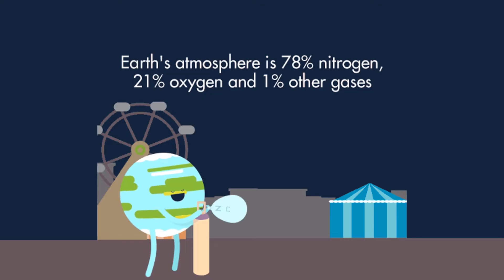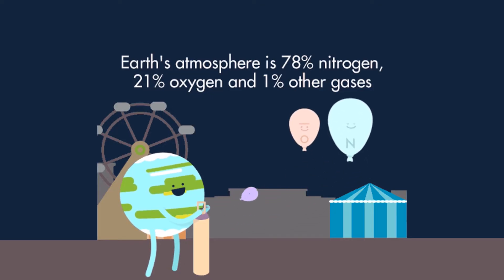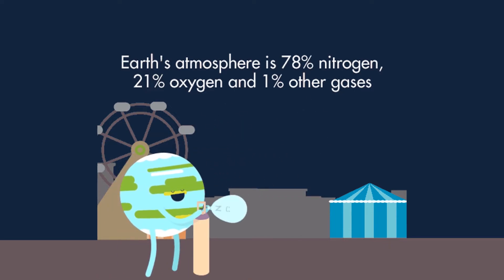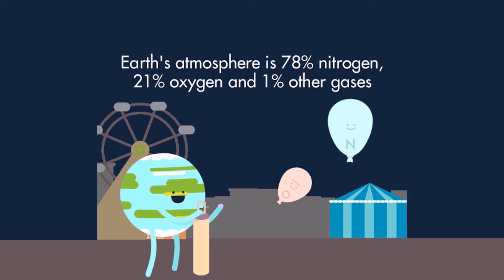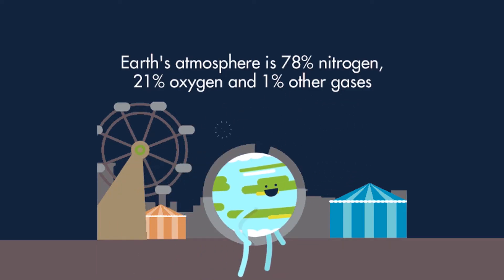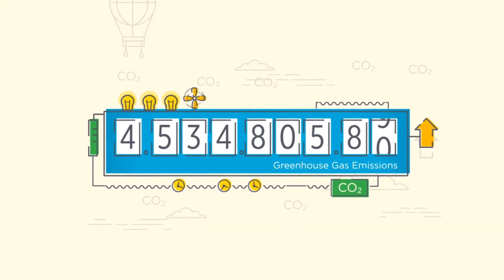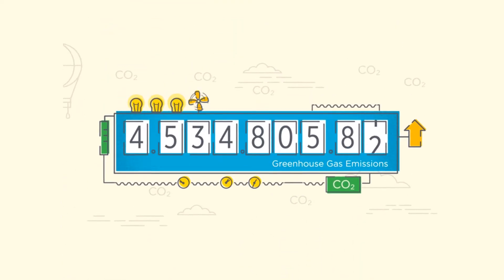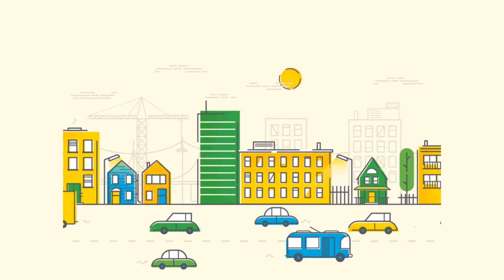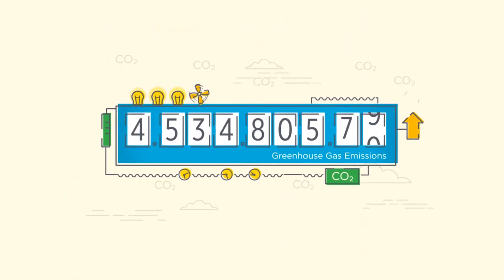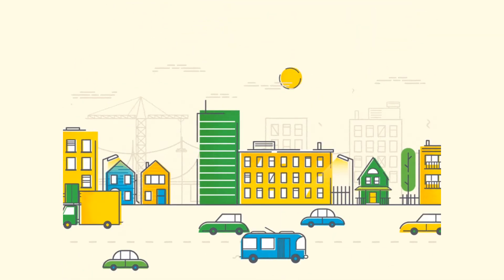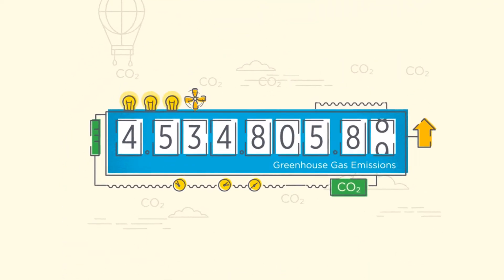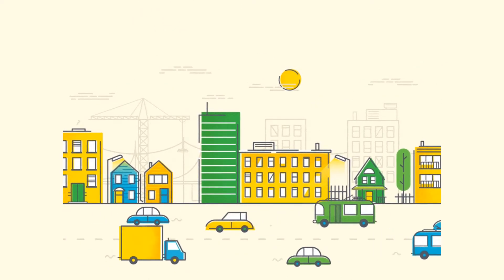Air is an invisible mixture of gases such as nitrogen and oxygen that surrounds the earth. Without air, plants, animals, and humans will not survive. However, as time goes by, the quality of air has changed. This is due to the increasing population, vehicles, growing number of factories and establishments, and continuous burning of plastics and other garbage that results in pollution. Air pollution is the introduction of materials into the atmosphere that produces adverse effects especially to humans and their daily activities.